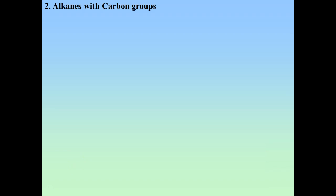Today's short lesson involves naming other types of alkanes — specifically alkanes that have extra carbon groups attached to them. We've already dealt with alkanes that have carbons with chlorines, bromines, and iodines attached, but we never talked about what happens if you add other carbons to the chain.